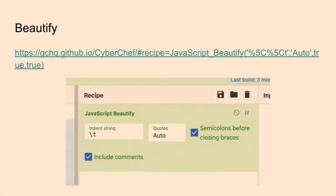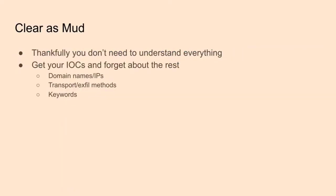What you really need to do is figure out your indicators - what domains is it contacting, what's it doing with the data it's harvesting? We don't really care exactly how it's assembling that data to be shipped off; we just care about where it's going and how we can stop it. JS Beautify in CyberChef is a good tool, especially if you're dealing with minified code - you toss it in there, it formats it nicely so it's much easier to read. Once again, we just need our IOCs.